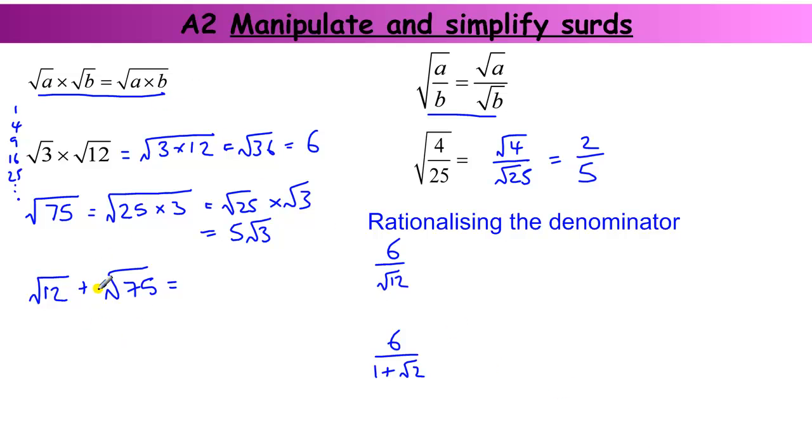Okay, a slightly more sophisticated version of that is when I've got to add two surds. It doesn't look like I can do much there, but if I simplify them first, so the square root of twelve is four times three, because four is a square number, that helps me to simplify it.